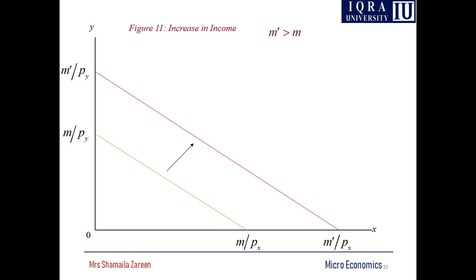In this diagram you can easily see the intercepts on the x-axis showing m over Px, and here it is m-dash over Px; m over Py and m-dash over Py. Whenever you are talking about a change in income, it means you are considering the prices of x and y are constant. If the salary of a person has been increased or decreased, but the prices of goods remain the same — prices are not changed but income is affecting the quantity of both goods x and y, meaning food and clothing.